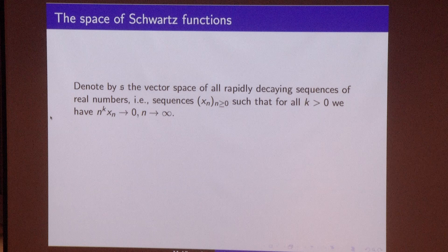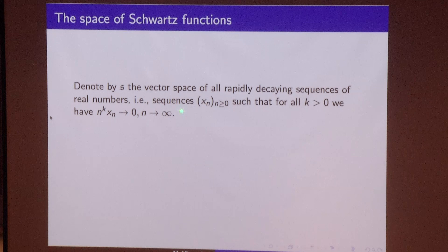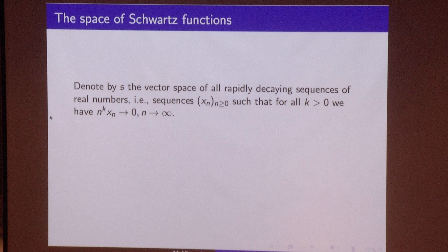This result can be reformulated in the following way — it can tell us something about the space of Schwarz functions. We denote by gothic S the space of all rapidly decaying sequences of real numbers, where if we have such a sequence and multiply it by any power of n, this sequence will still tend to zero as n tends to infinity. So it's like a discrete version of a Schwarz function.